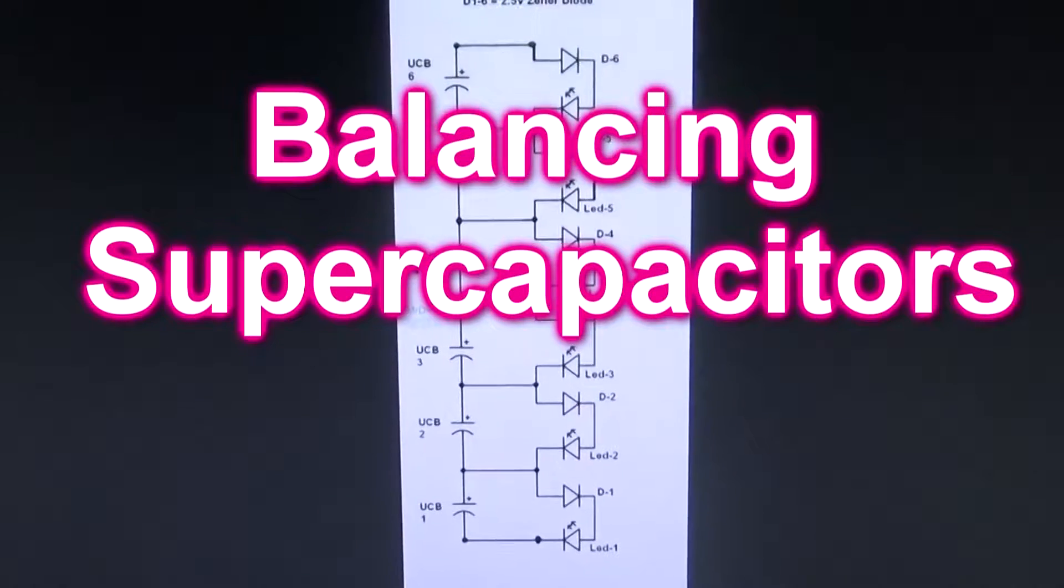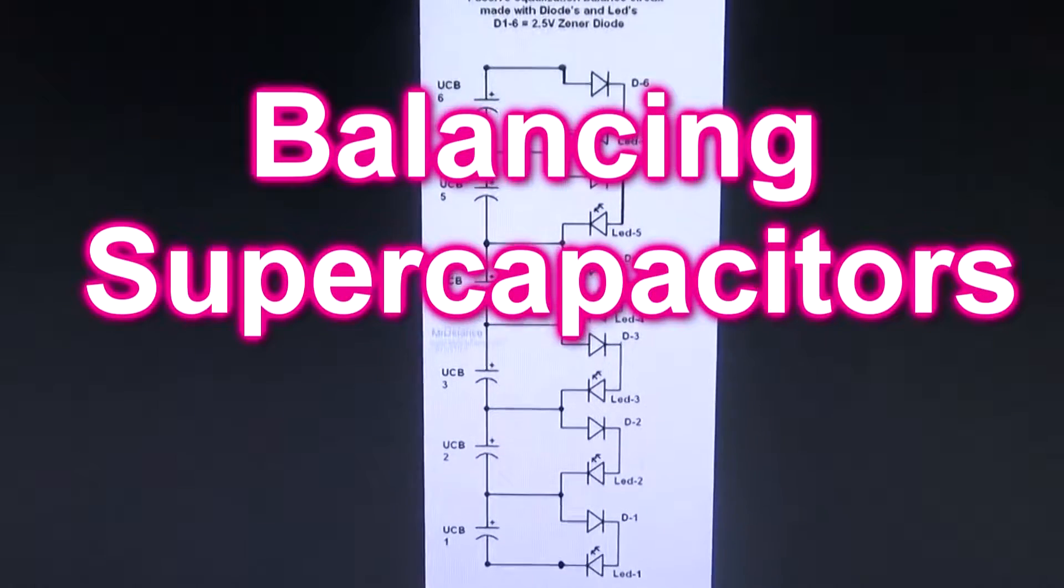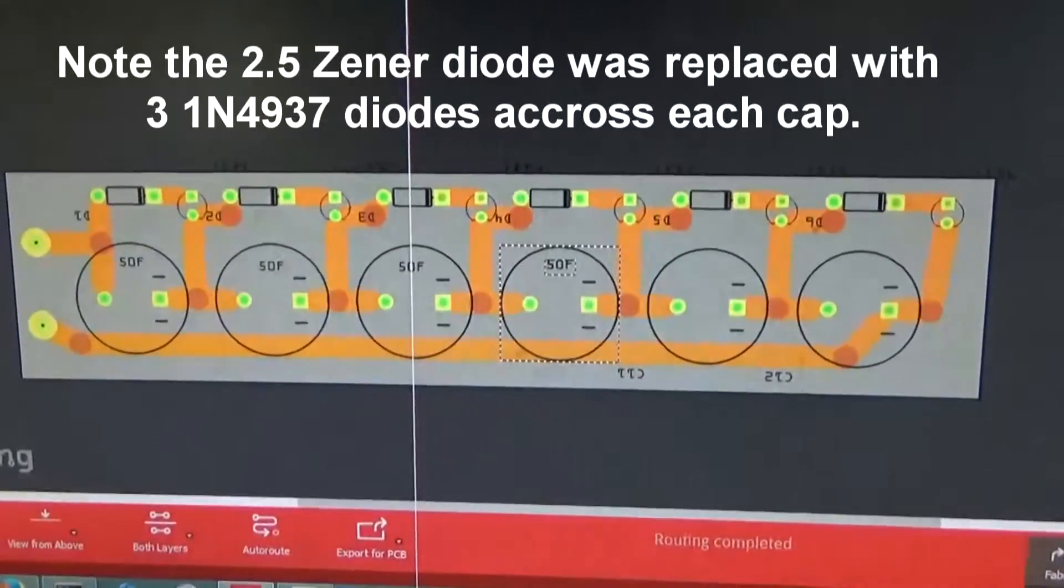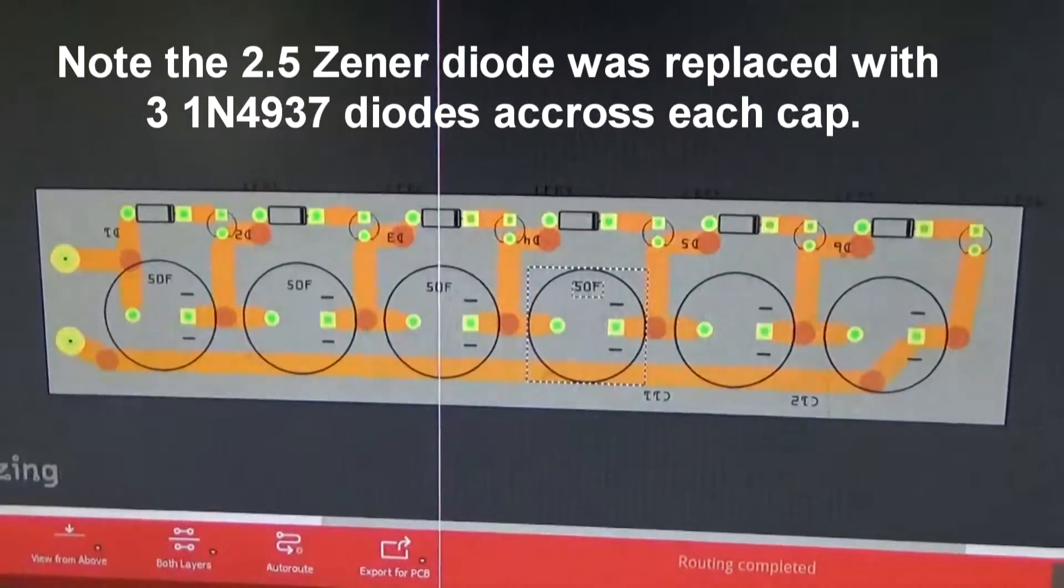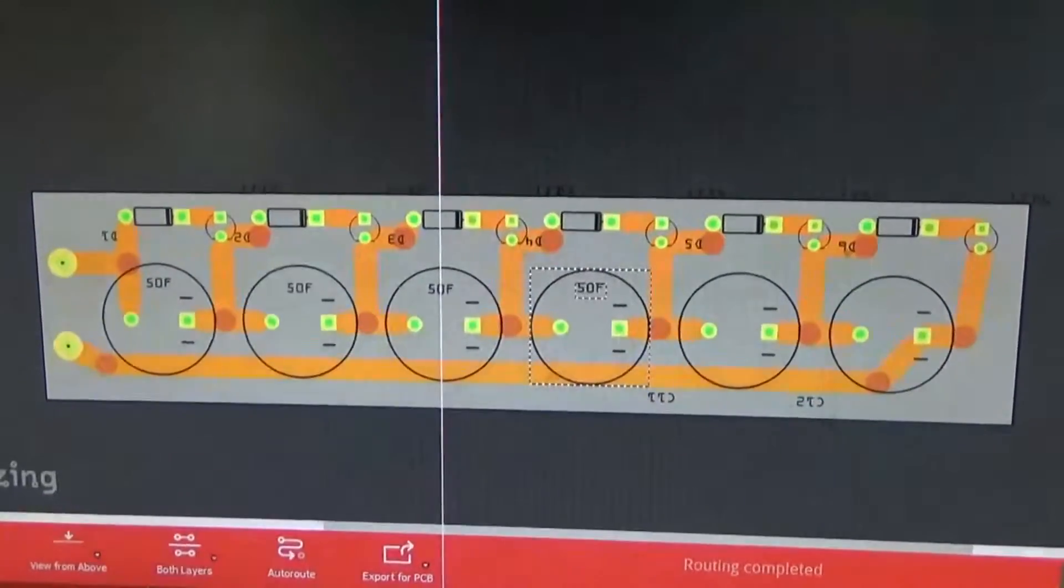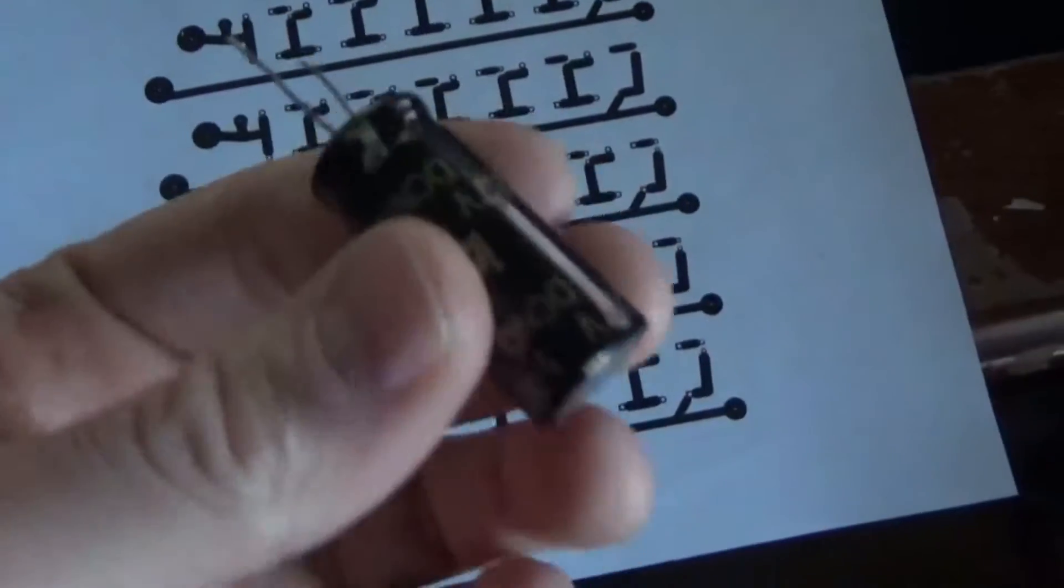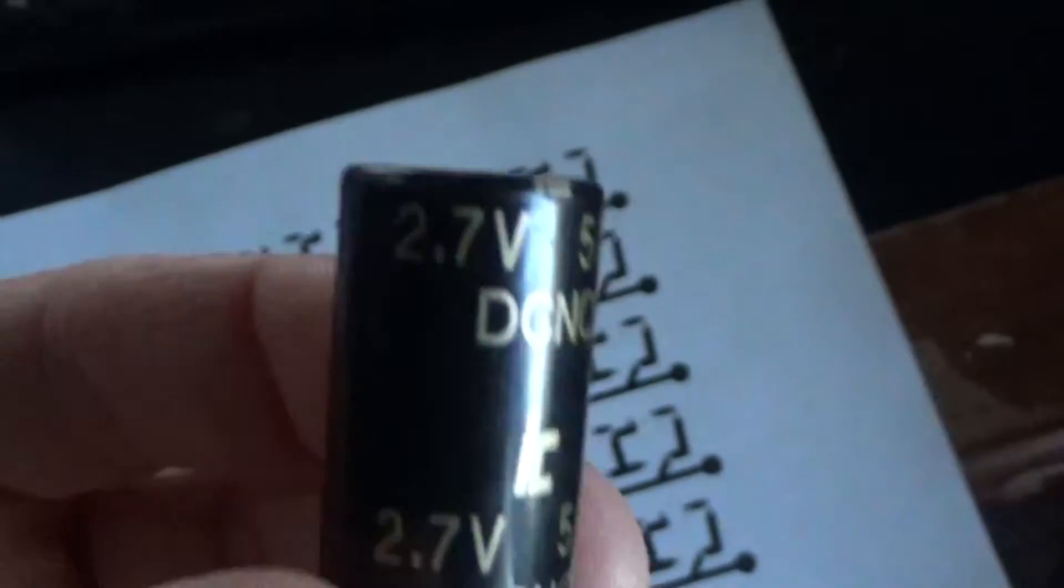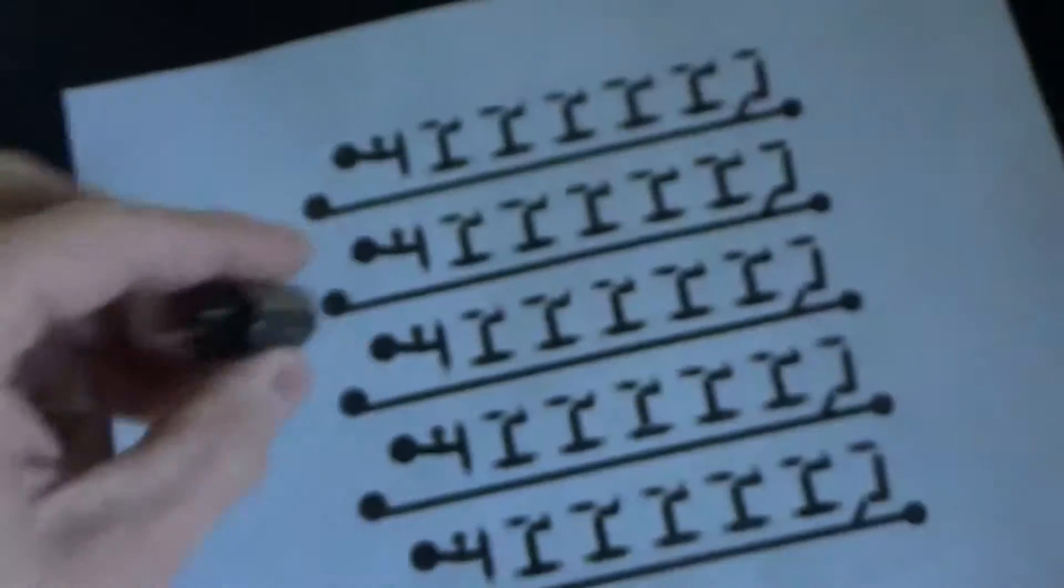Today's project is going to be a balancing circuit for supercapacitors. I found a circuit online, so I'm going to make a PCB, solder this thing up and see if it works. These are the size of the caps that I got. I think I got these off of a site called BG Micro. It's 2.7 volts at 50 farads.